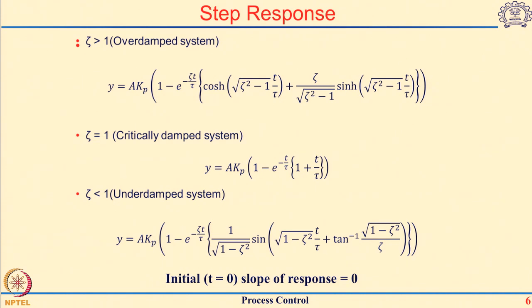In all these cases, if we take the slope of this response at time t equal to 0, that slope is going to be 0. So the response does not directly start at t equal to 0; there will always be a zero slope at time t equal to 0 and slowly the response will catch up. This is a distinguishing factor between a first and a second order response.